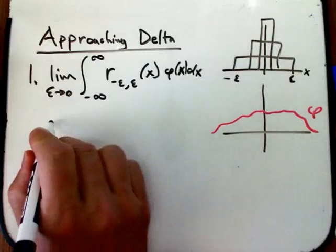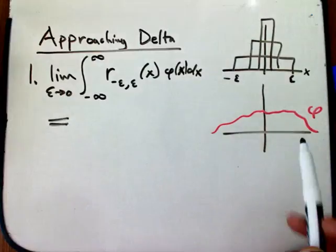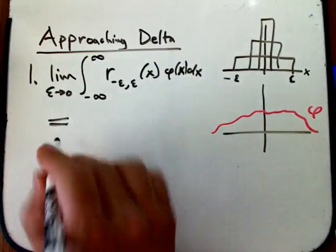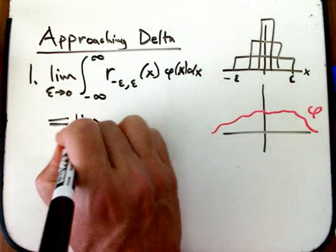Because even here, if you do that, unless you assume something about phi, this is still not going to work. Because what is this? This is the limit.